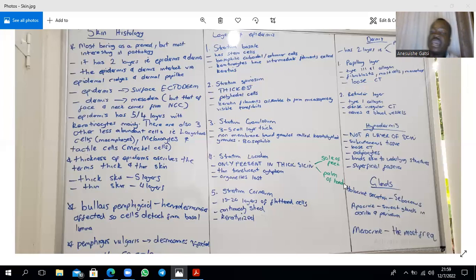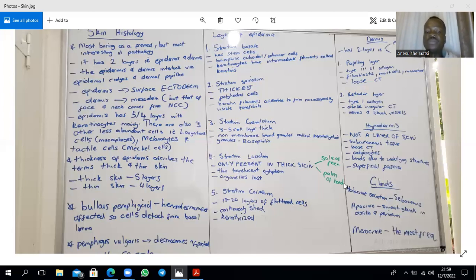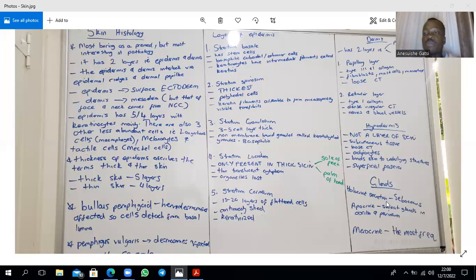The hair itself has a medulla, then a cortex — which is about 80% of the composition of the hair and is the largest layer — then the cuticle of the hair shaft. The sebaceous glands develop as outgrowths of the external root sheath, not the internal root sheath, and they remain associated with a hair follicle. There is something called a pilosebaceous unit, which is the sebaceous gland, its secretion, and the hair follicle it secretes into.